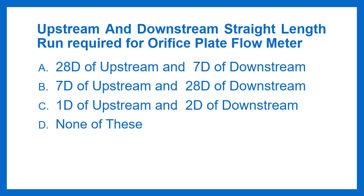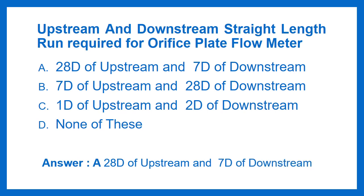Upstream and downstream straight length run required for orifice plate flow meter: Option A - 28D upstream and 7D downstream, Option B - 7D upstream and 28D downstream, Option C - 1D upstream and 2D downstream, Option D - None of these. The answer is Option A: 28D of upstream and 7D of downstream.